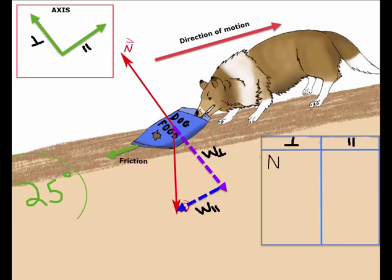For the perpendicular direction, we have N and also the weight, but this is the perpendicular component of the weight.